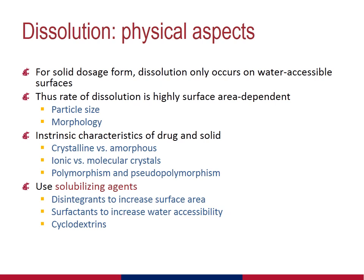The total surface area of solid particles is a function of particle size, as we have seen, but also of morphology. In other words, particles occupying the same volume can have very different amounts of total surface area depending on their shape. In general, spherical particles will have the lowest amount of total surface area.